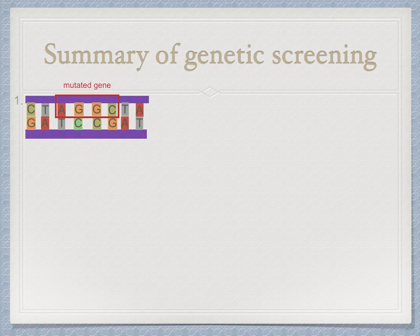Let's have a look at a summary of genetic screening. First, the order of nucleotides on the mutated gene is determined by DNA sequencing, which we looked at in the last topic. Nowadays, you have genetic libraries which store the DNA sequences of many of the genes responsible for common genetic diseases.